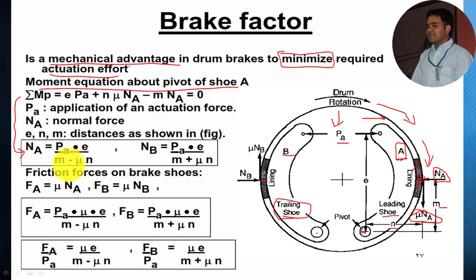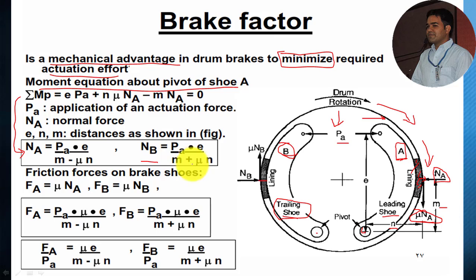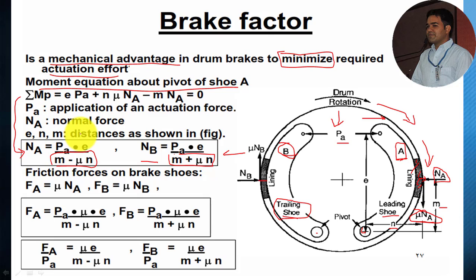From this equation we can write for shoe A: Na equals Pa times e divided by (m minus mu times n). If we consider the moment about the pivot point for shoe B, similarly we get: Na equals Pa times e divided by (m plus mu times n). By observing these equations we can say that, considering the same actuation effort, the denominator for the leading shoe is less than the denominator for the trailing shoe. So the normal force produced for shoe A is quite higher than that for shoe B — this indicates the assistance in braking which is known as servo action.